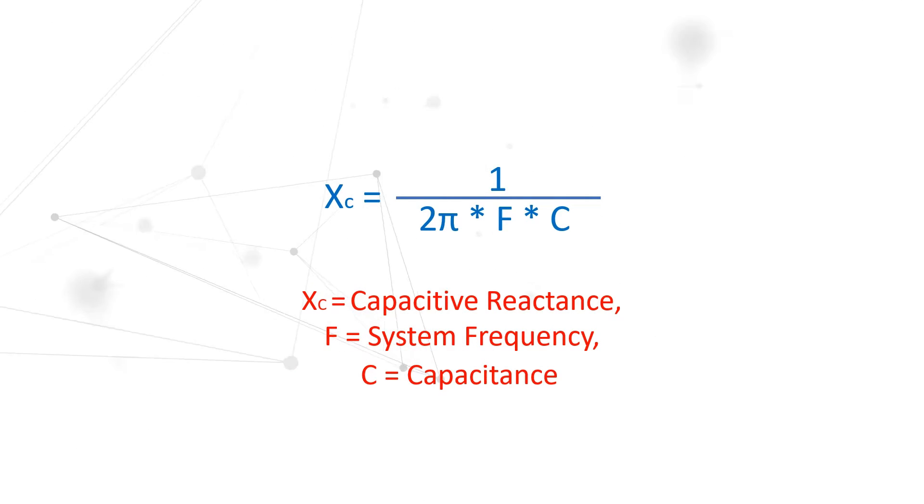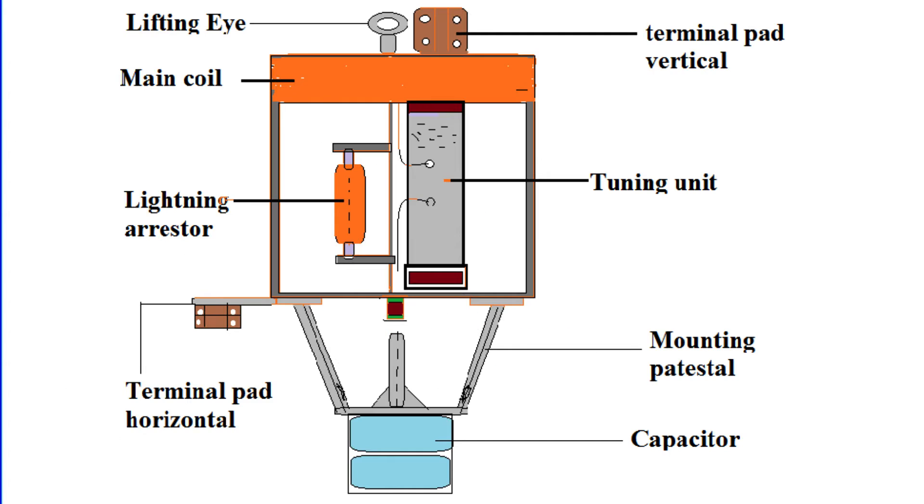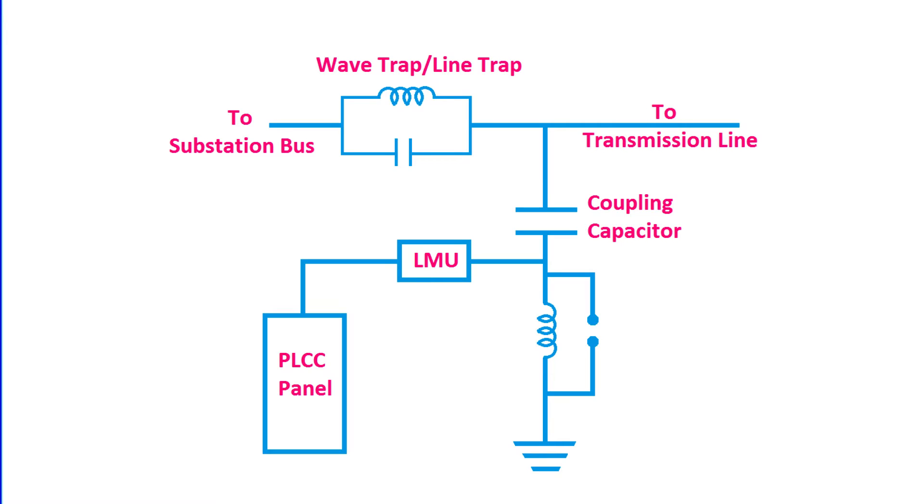The third component is the tuning device, which fine-tunes the wave trap's performance. This device, nestled within the main coil, comprises coils, capacitors, and resistors. It adjusts the blocking frequency or bandwidth and is weatherproofed to withstand various conditions.